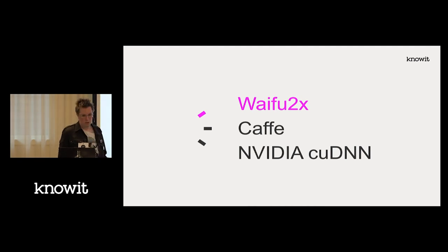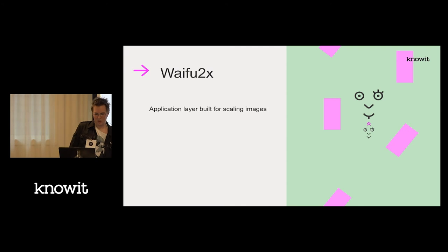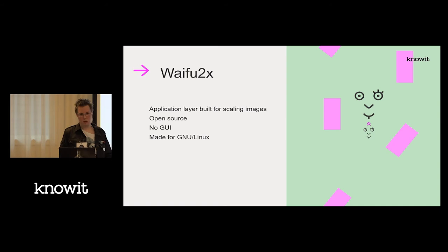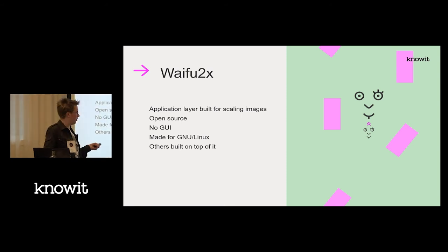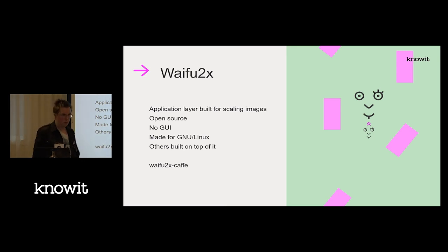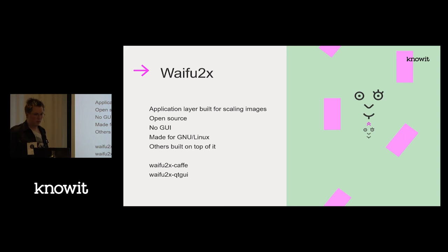Waifu2x is the interesting application layer — built for scaling images as its primary function. It's open source, has no GUI by default, and was made for Linux originally. Other things are built on top of it. Caffe is not required on Linux — you can run waifu2x directly on a Linux machine without an intermediary layer. A GitHub project has made it work on Windows by adding that layer.